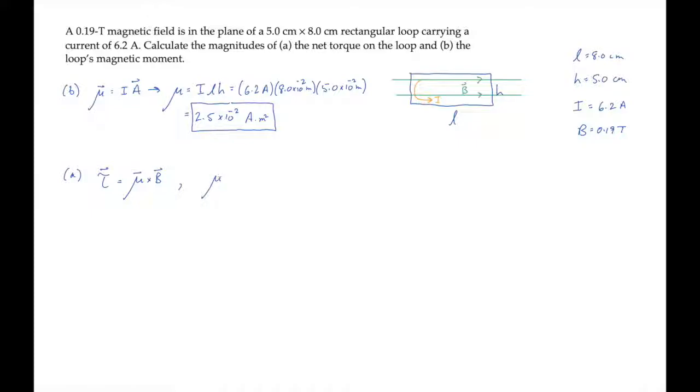The magnetic moment is parallel to the area, which is perpendicular to the magnetic field. So the magnitude of the cross product just equals mu times B. When we multiply those, we find that the torque is 4.7 times 10 to the minus 3 newton meters.